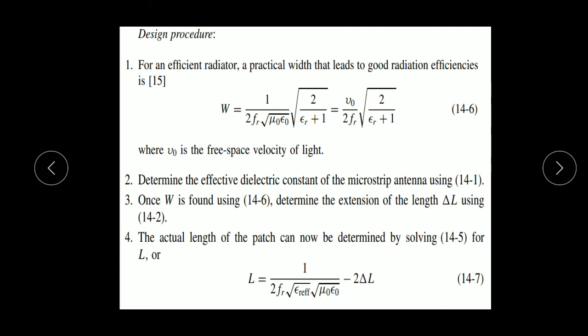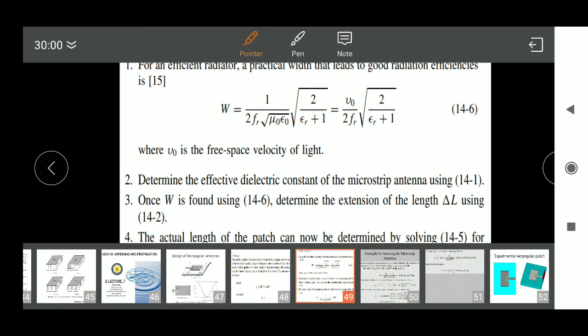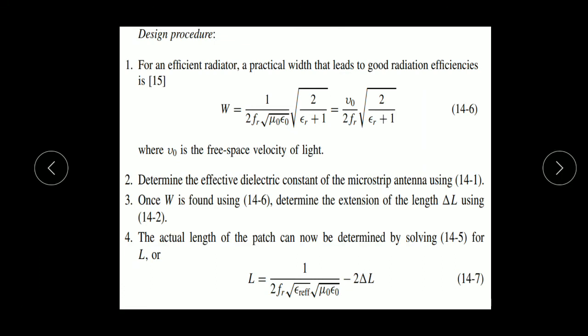This is the procedure. First, we calculate the width W as per the given dielectric constant. After calculating W, we determine the effective dielectric constant, given by formula 14.1. Once W is found using equation 14.6, we determine the extension of the length, ΔL, using formula 14.2. ΔL is the additional length due to the fringing effect at slot 1 and slot 2, so the total fringing extension is 2ΔL. The actual length of the patch antenna can then be determined using this formula.